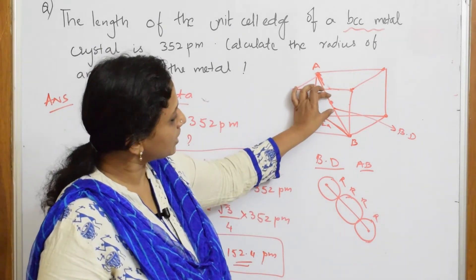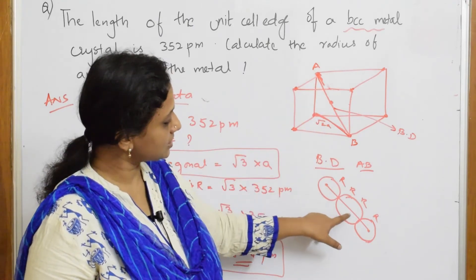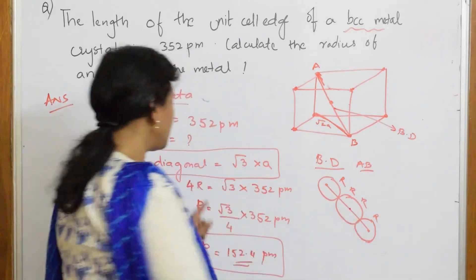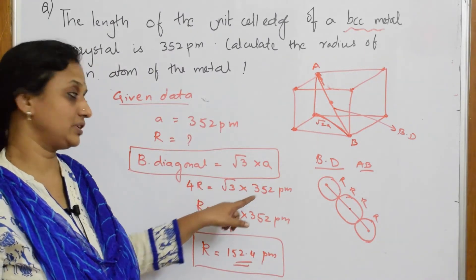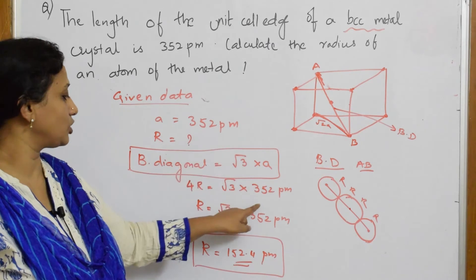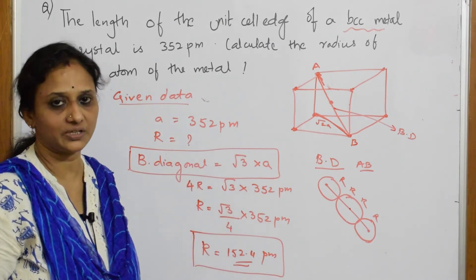Now what is body diagonal? Because this is BCC, there are three atoms touching: radius R, R, and R. I made body diagonal as 4R. I know √3 × a, a is given to me in picometer. I multiplied and got the radius. Thank you.